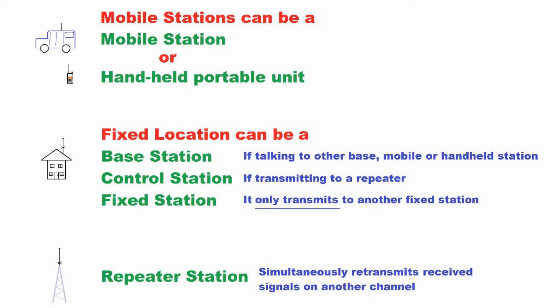A control station is a base station that is talking through a repeater at that particular time. A fixed station, by definition, is only talking to another fixed station.